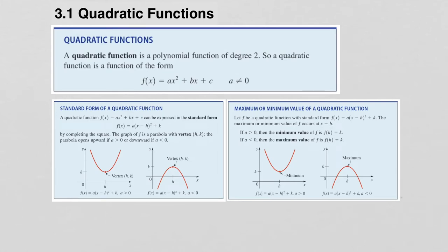In section 3.1, we introduce a very special type of function called quadratic functions. A quadratic function is nothing more than a polynomial function of degree 2. The general form of a quadratic function is f(x) = ax² + bx + c. We say this is a second-degree polynomial function because the highest power of x is the second power. For quadratic functions, we assume the leading coefficient a is not zero, because if a were 0, this would simply be a linear function.